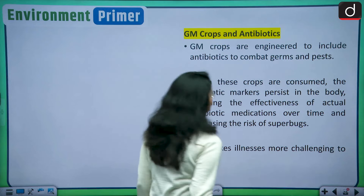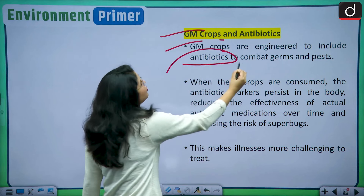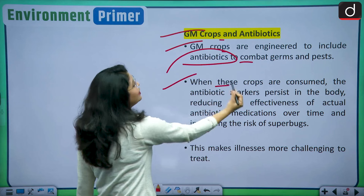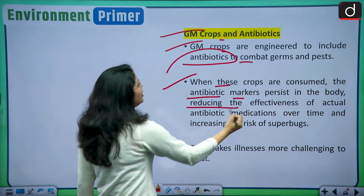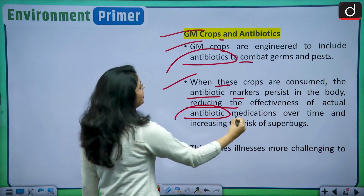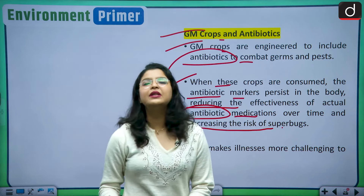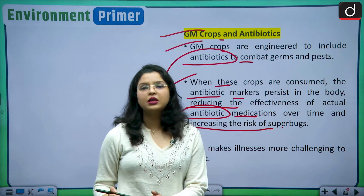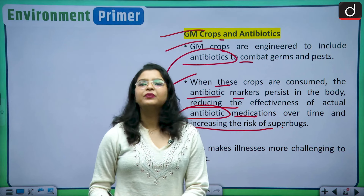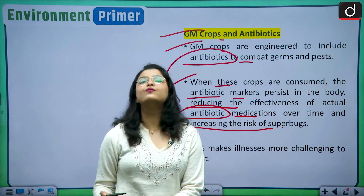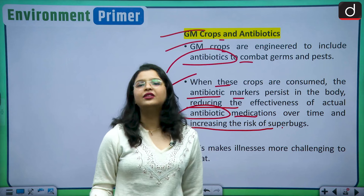GM crops and antibiotics is another concern. GM crops are engineered to include antibiotics to combat germs and pests. When these crops are consumed, the antibiotic markers persist in the body, reducing the effectiveness of actual antibiotic medications over time and increasing the risk of superbugs. This means human consumption of genetically modified crops may make people resistant to antibiotics used as medicines, posing a serious human health threat.